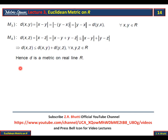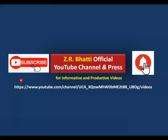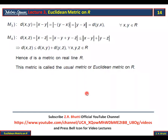Hence, after proving all four axioms of the metric, we can conclude that D is a metric on the real line R. This metric is called the usual metric or Euclidean metric on R. Keep in mind that whenever a metric on R is mentioned without a specific definition, it refers to the usual metric. If a different definition D(x,y) = something other than |x - y| is given, then it will not be the usual or Euclidean metric on R.